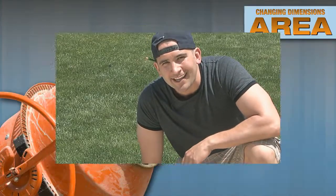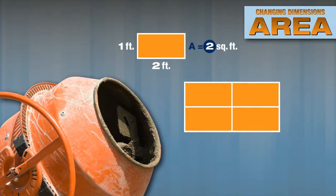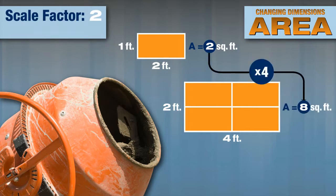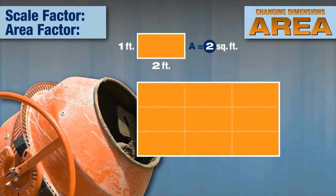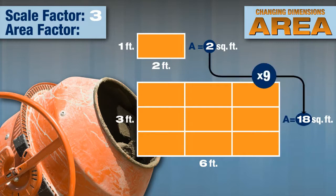Here's how I explained it to Rick. The area of a one by two foot rectangle is two square feet. If you double the linear dimensions to two feet by four feet, the scale factor is two. As you can see, the new area is eight square feet — that is four times the original area, so the area factor is four. If you triple the linear dimensions to three feet by six feet, the scale factor is three and the new area is 18 square feet. The area is nine times the original, so the area factor is nine.